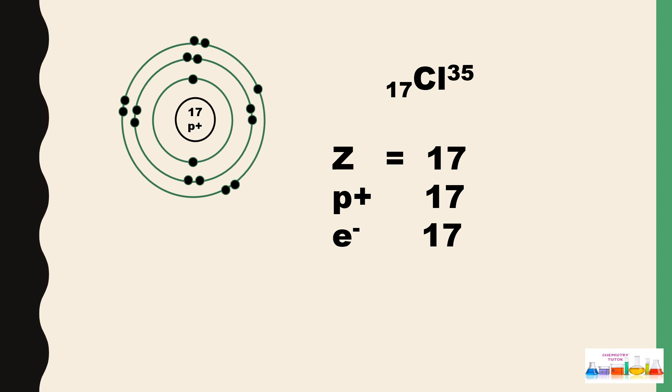So in chlorine, 17 protons and 17 electrons are present. Let's see the formation of chlorine anion. When chlorine accepts one electron, its number of electrons after getting one electron will become 18, and a negative charge will appear on the chlorine because chlorine accepted only one electron.